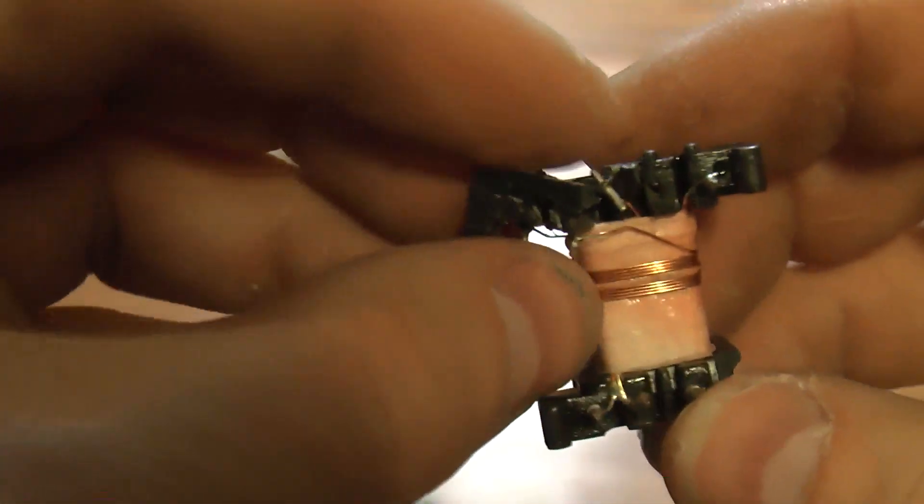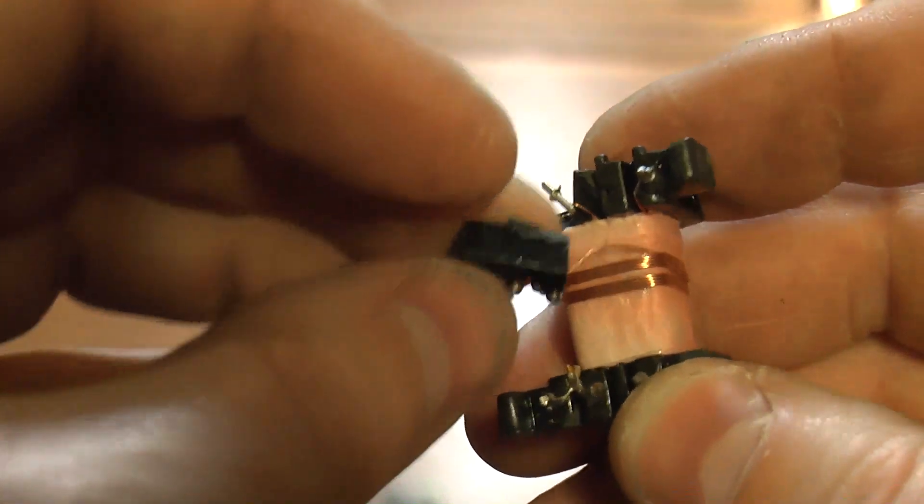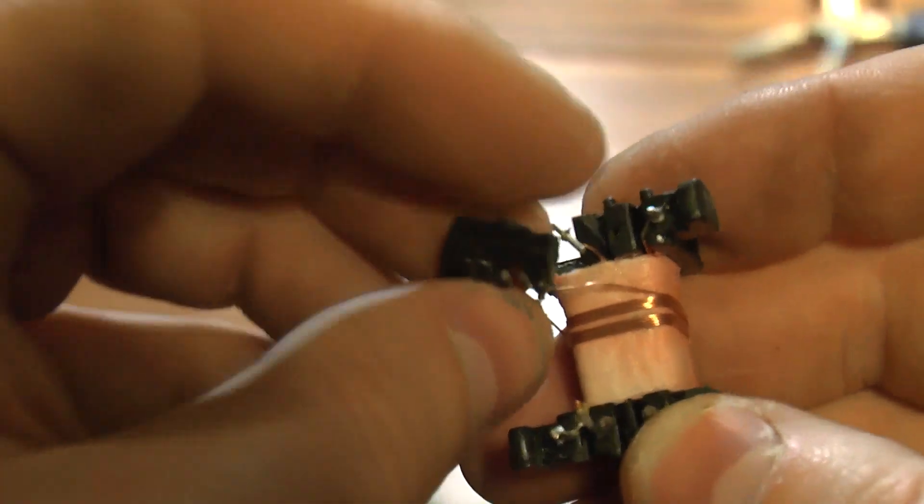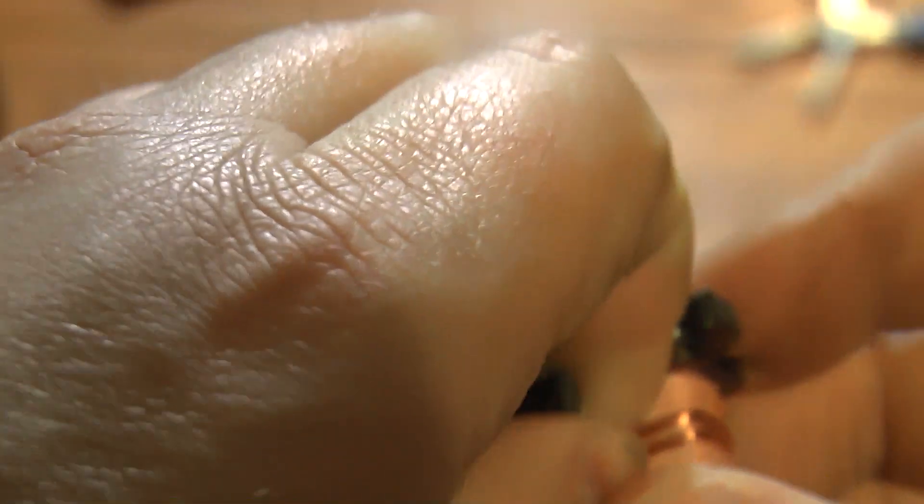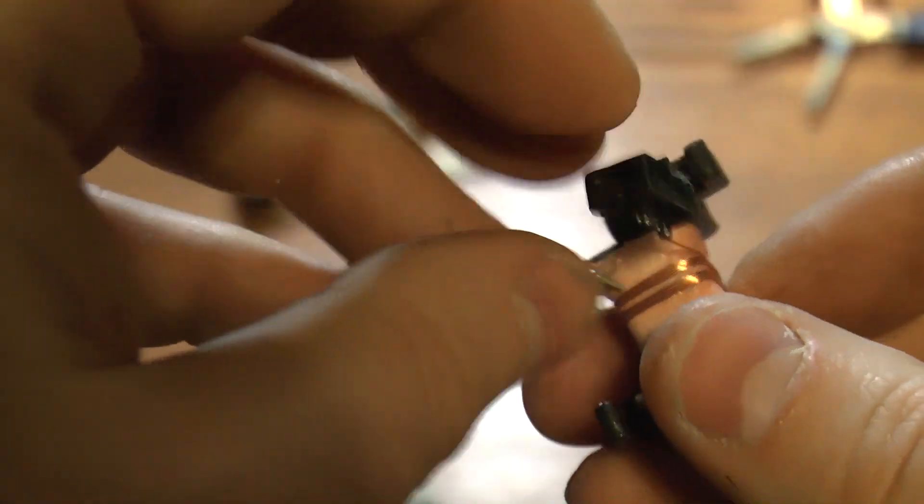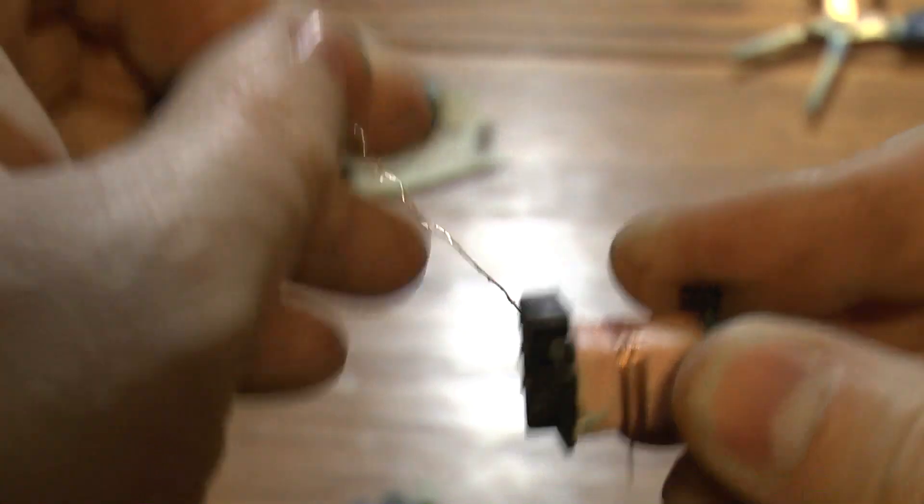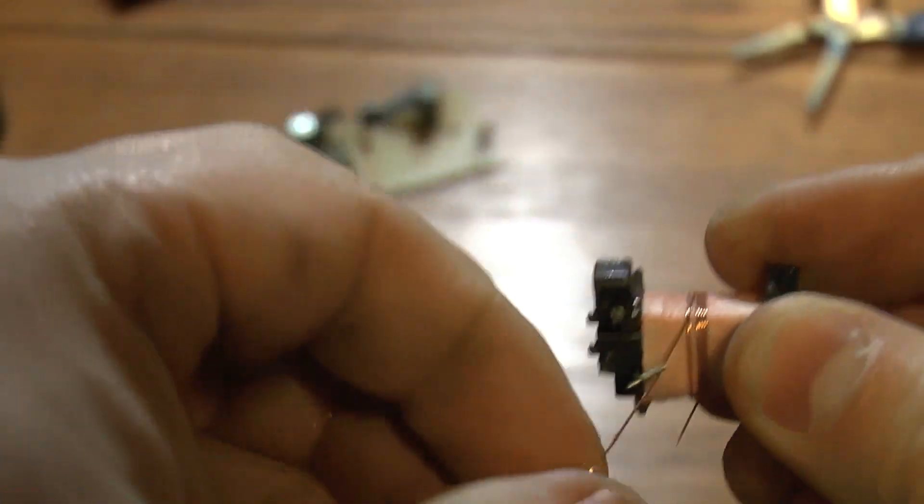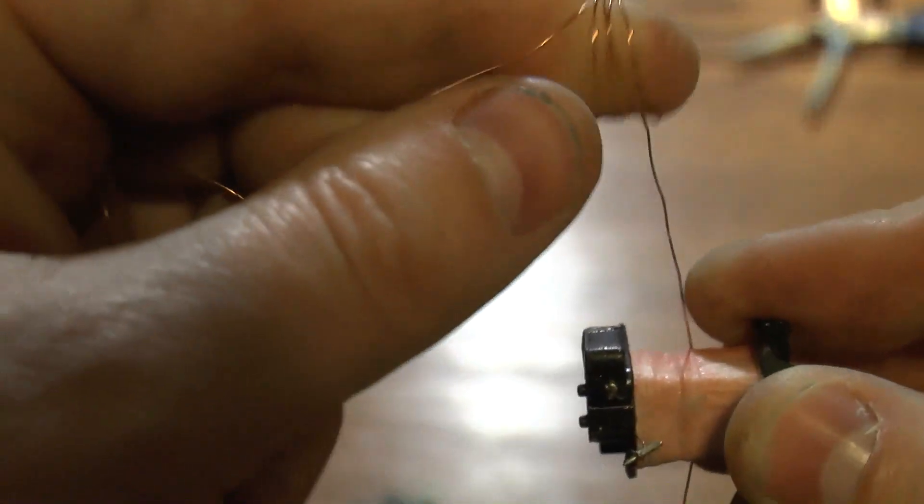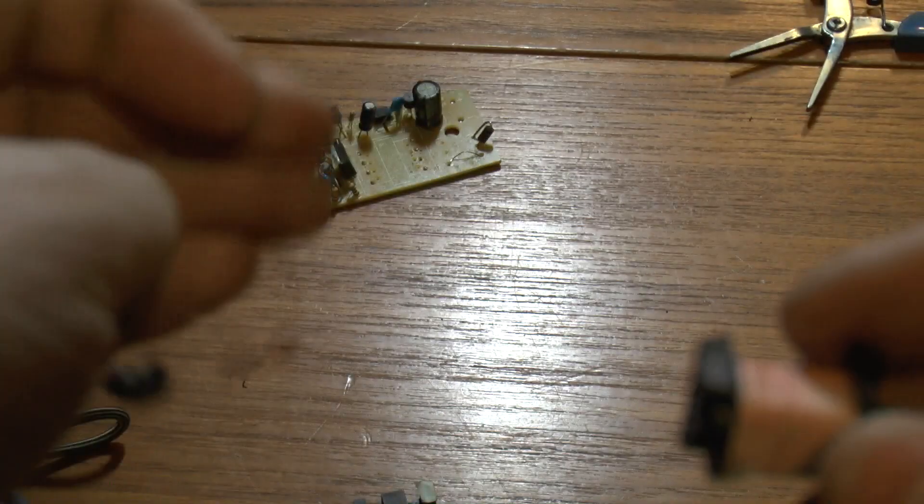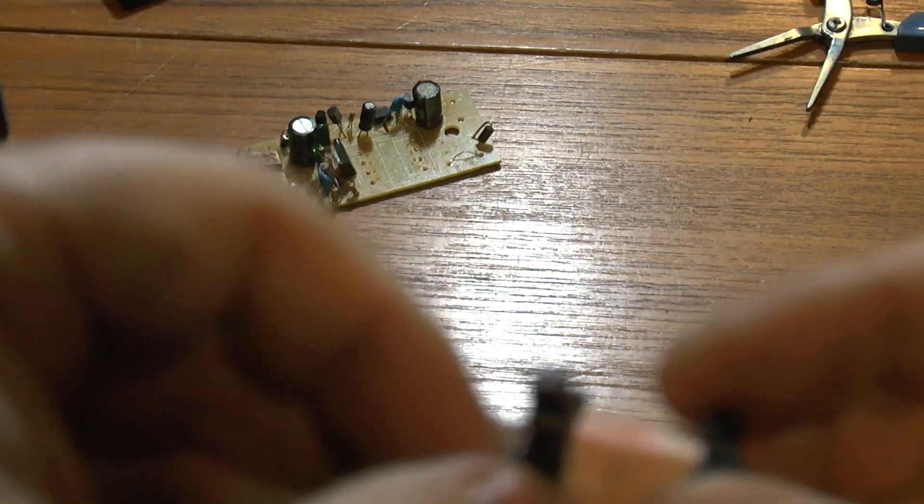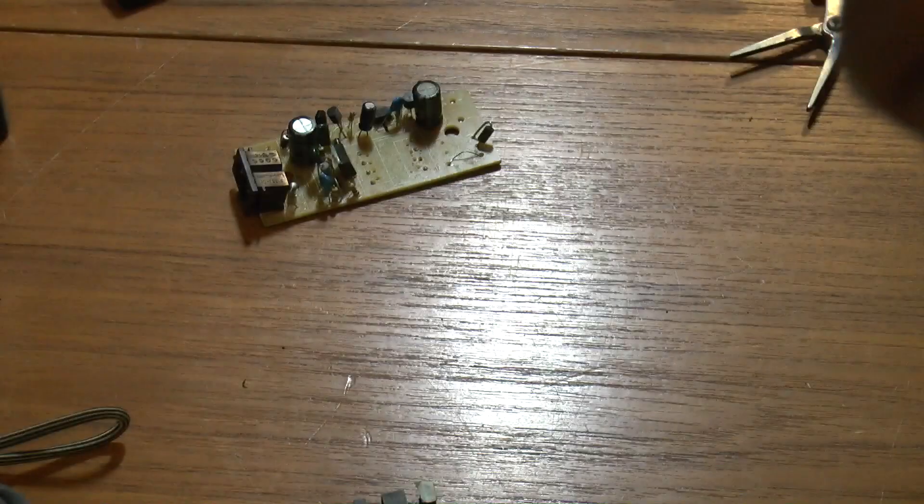Then we've got this, I assume, I don't know anything about switch mode power supplies, I assume this is like a feedback winding. This is one, two, three. Another eight turn winding. Same as the secondary.